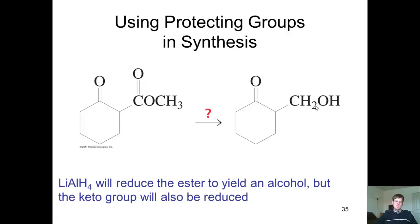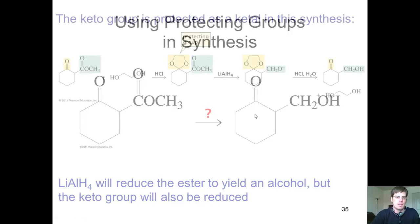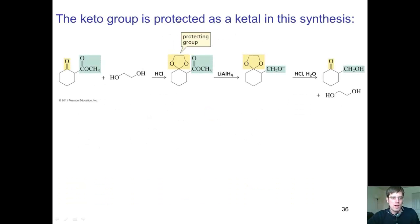So how in the world can I do this? The way I do this is by using protecting group chemistry, where I can protect a ketone from being reactive to lithium aluminum hydride, and then ultimately remove that protecting group later to give me back my ketone. I want to mask this ketone as something that will not react with lithium aluminum hydride.